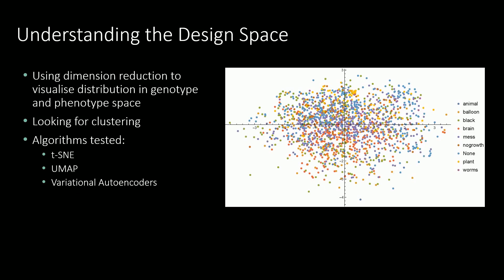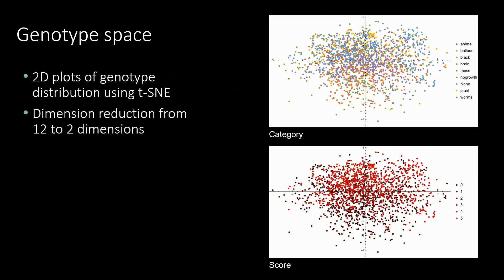The first thing we looked at was whether we could use dimension reduction methods to visualise the distribution of both genotype and phenotype space, looking for structure in the data. We looked at three different algorithms to reduce the data to two dimensions: TSNE, UMAP, and variational autoencoders. Reducing the 12 genotype dimensions to two using TSNE, we didn't find any particularly obvious clustering for either the category or score data, apart from a general tendency for higher score samples being in the upper left quadrant. We think this reveals that the genotype space is quite unstructured in relation to aesthetic concerns.